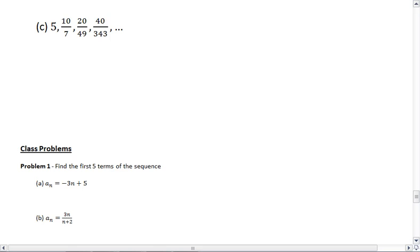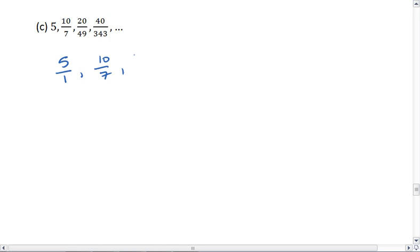And lastly, we have example c. On this one, we recognize that, and it might help to rewrite 5 as 5 over 1. If you get something that has a bunch of fractions, it's usually easier to deal with the numerator and denominator separately. In this one, we recognize that the numerator is constantly multiplied by 2. And the denominator is constantly multiplied by 7. This means we have a common ratio of 2/7, where the first term is 5.